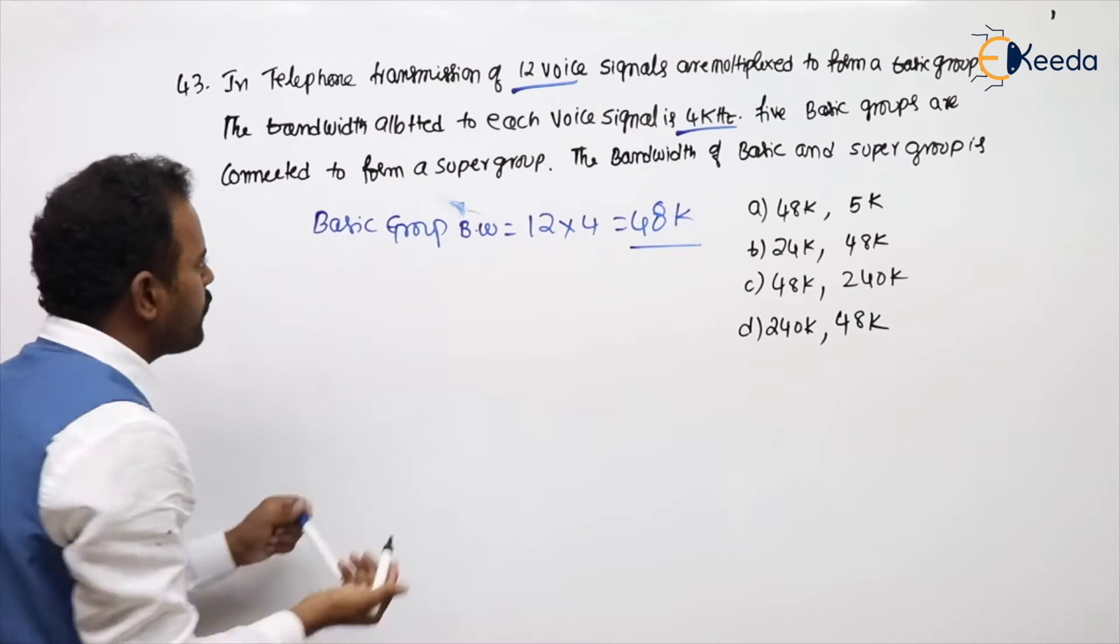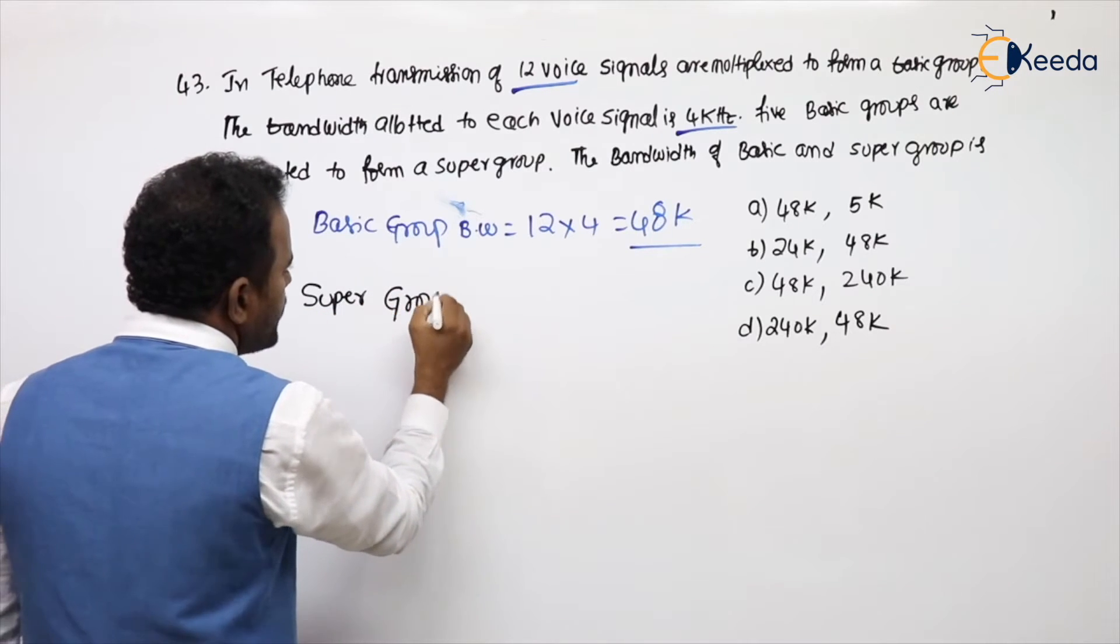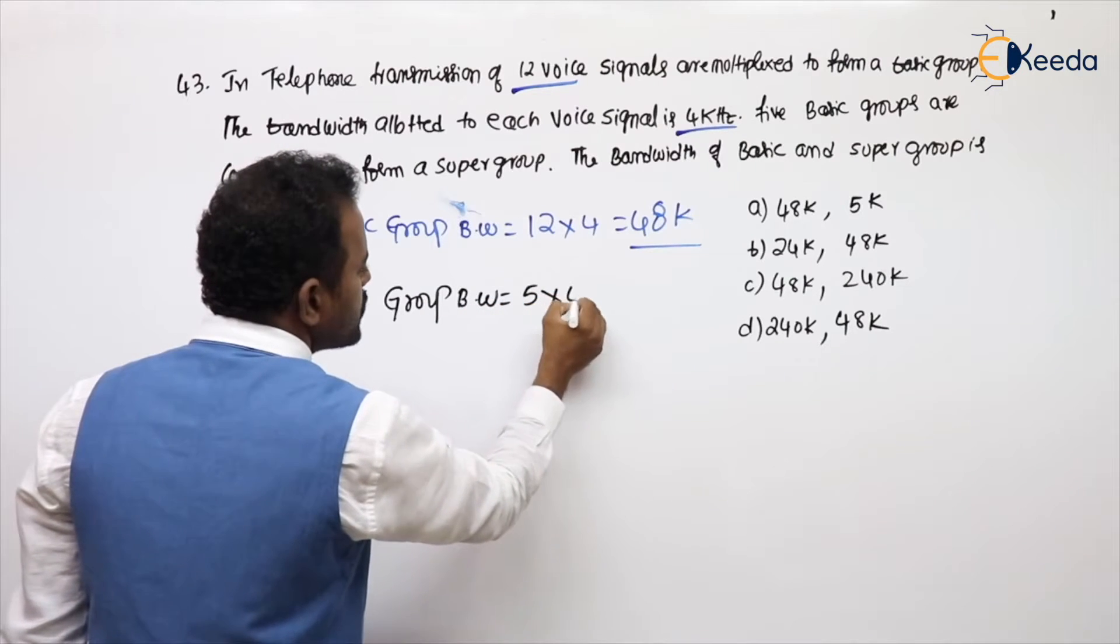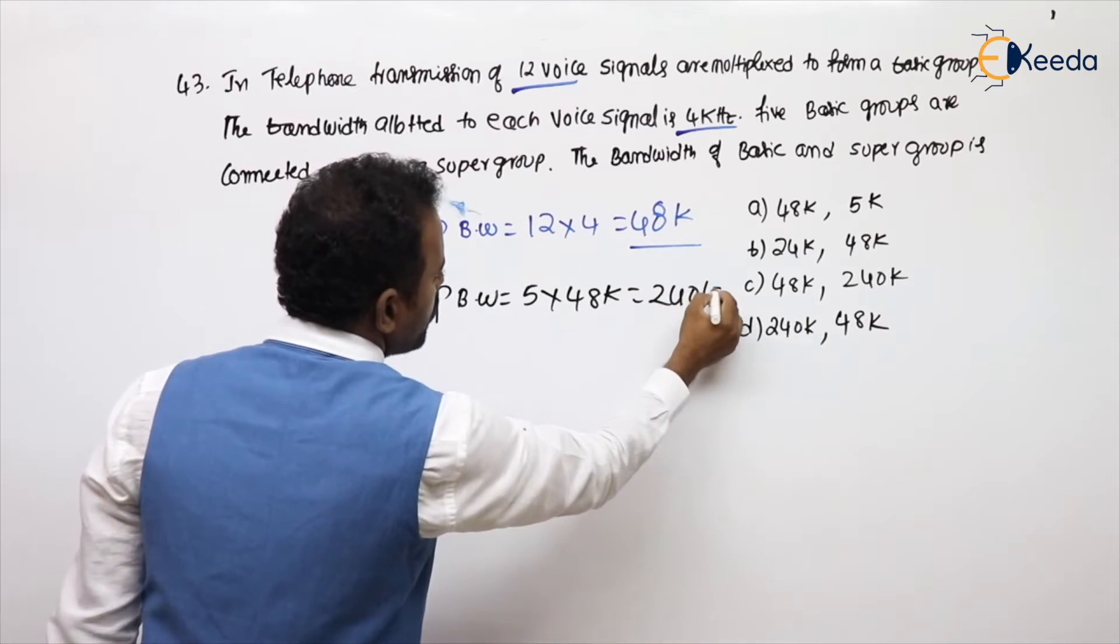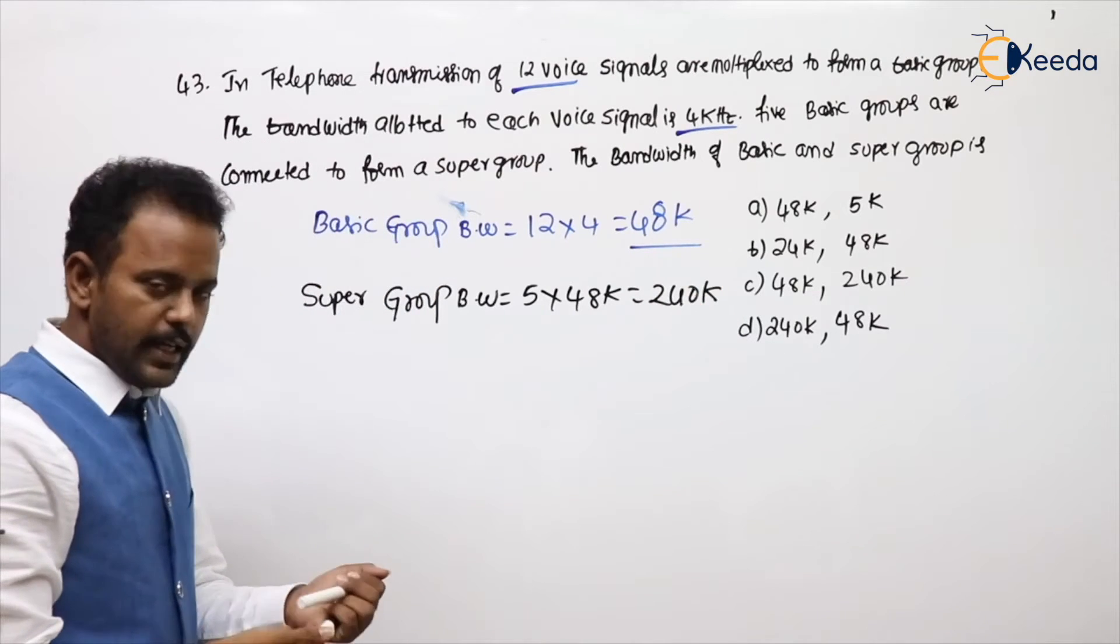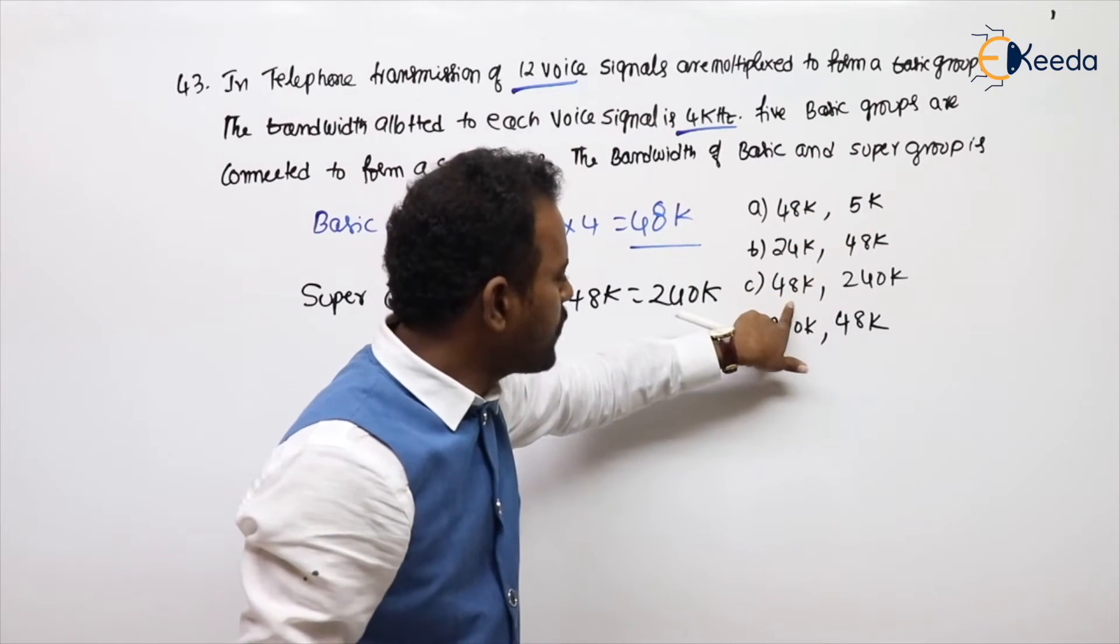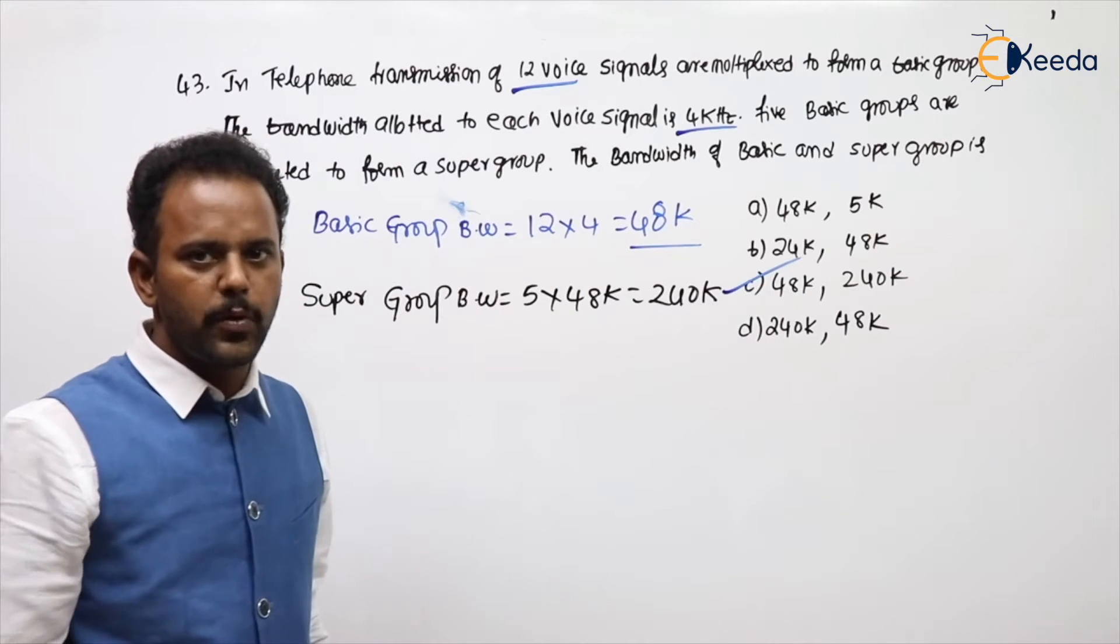And how are we forming the supergroup? Supergroup bandwidth is equal to, 5 basic groups are combined to form a supergroup. Then see the order. First, he is asking basic and super. Basic is 48, super is 240. Very simple question.